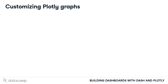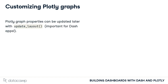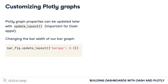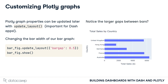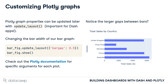We can set many properties of a Plotly graph upon creation. However, sometimes we may want to update them later — this is very important for our Dash apps. We do this using the update_layout method of the figure object, which accepts a dictionary containing key-value pairs of the properties to change and their new values. Let's change the bar width of our bar graph by setting a larger bar gap, making the bars themselves thinner. We can then show the new figure — notice the larger bar gaps. You can check the specific properties that can be set for each graph in the Plotly documentation.